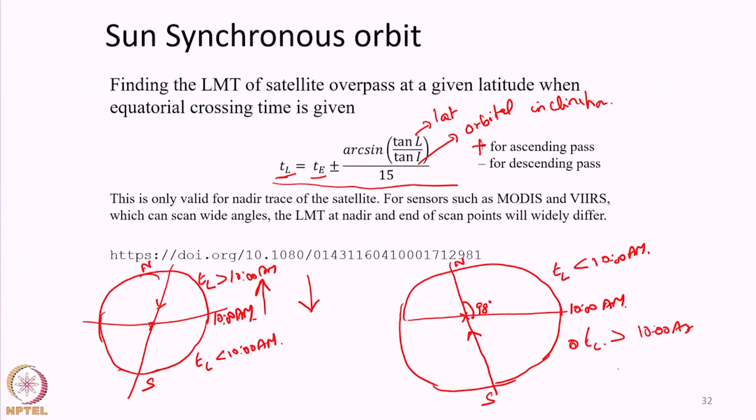Based on this general equation we can calculate at what time the satellite will overpass any given latitude. This will not change with longitude — the time will vary only based on latitude. For all places at the same latitude, the overpass time will be the same — that is the characteristic of sun-synchronous orbit.